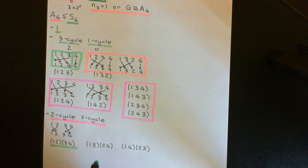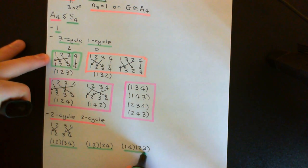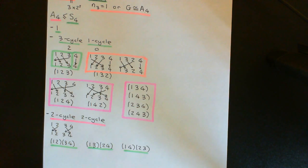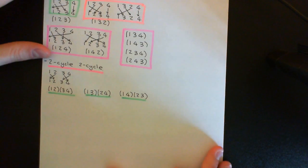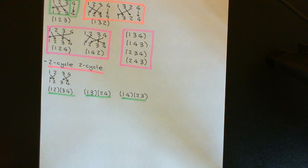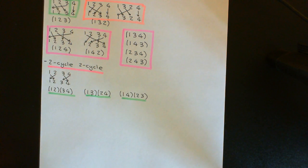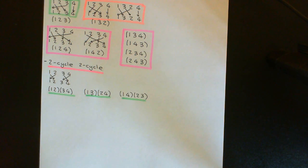So now we have completed A4. We have the identity, the eight 3-cycles with a 1-cycle, and the three double transpositions. All the other elements of S4 — all six transpositions and all six 4-cycles — are going to be odd permutations, and therefore they will be in the other coset that A4 partitions S4 into.